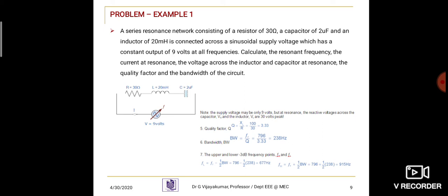Fifth: quality factor Q equals XL divided by R. With XL and R known, Q is approximately 3.33 — no unit for quality factor. Bandwidth equals FR divided by Q: 796 divided by 3.33 gives 238 Hz. The lower band frequency FL equals FR minus half the bandwidth: 796 minus 119 gives 677 Hz. The higher band frequency FH equals 796 plus 119, giving 915 Hz.